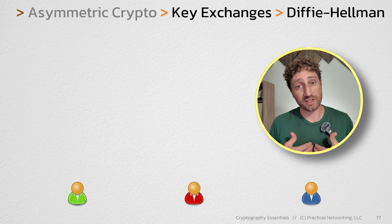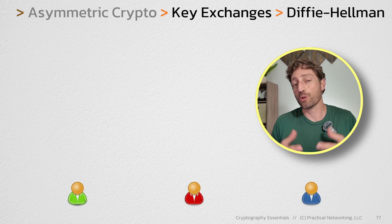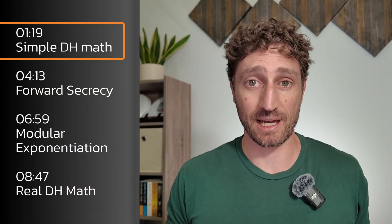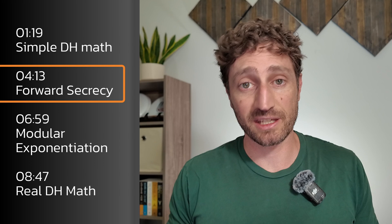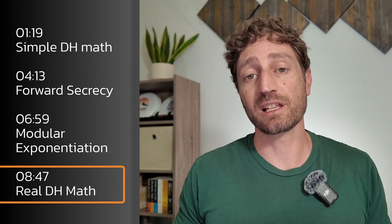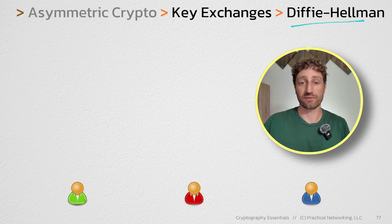The nerd in me loves the math, thinks it's fascinating and really cool to see. On the other hand, most folks don't really need to understand Diffie-Hellman to that level. So I'm going to show you Diffie-Hellman twice. First, I'm going to show you Diffie-Hellman using simplified math. Then I'm going to talk about keeping something encrypted forever. And finally, I'll show you a clip from my SSL and TLS deep dive course covering the actual math behind the algorithm.